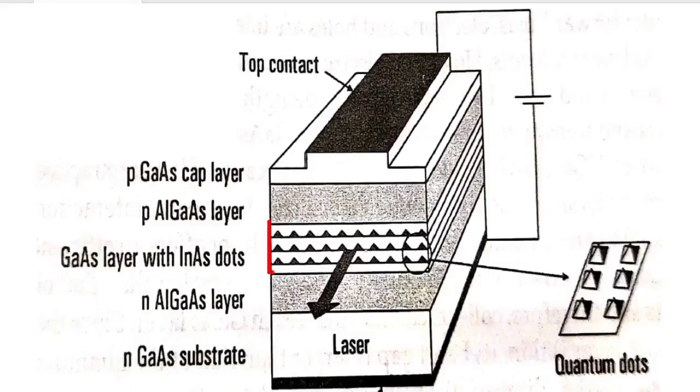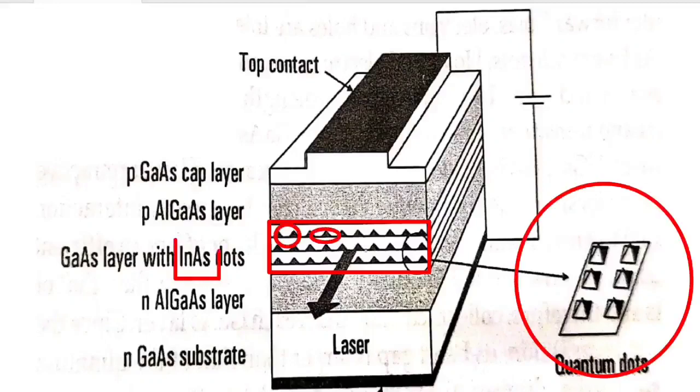Here the gallium arsenide layer is sandwiched between AlGaAs layers to confine the carriers. Indium arsenide quantum dots are implanted onto the gallium arsenide wetting layers. The wetting layers are very thin layers, close to monoatomic layers. The thickness will be around 0.5 nanometer. So the electronic properties of this quantum dot can change as a result of this wetting layer.